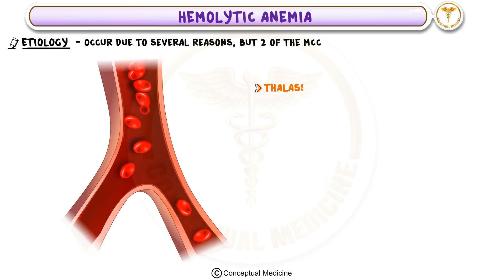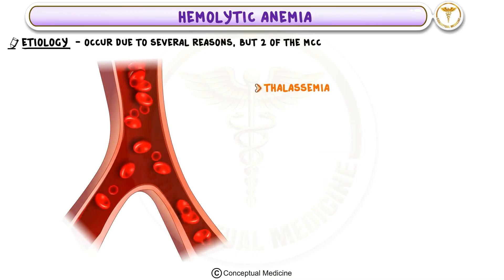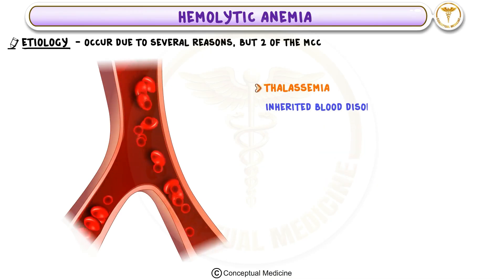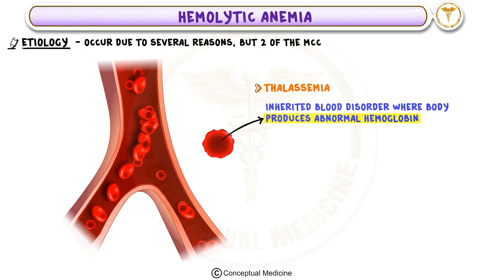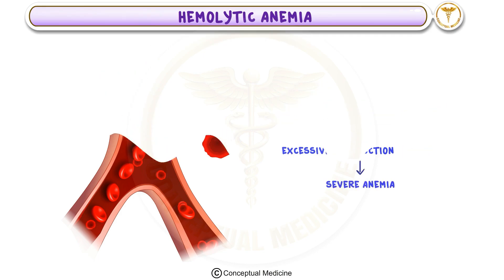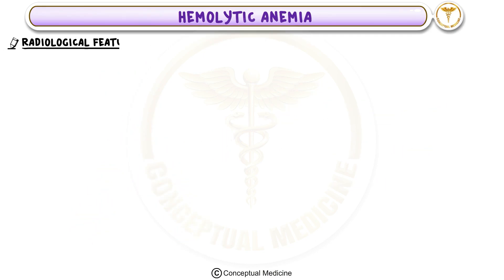2. Thalassemia is another inherited blood disorder where the body produces abnormal hemoglobin. This leads to excessive destruction of RBCs, causing severe anemia.